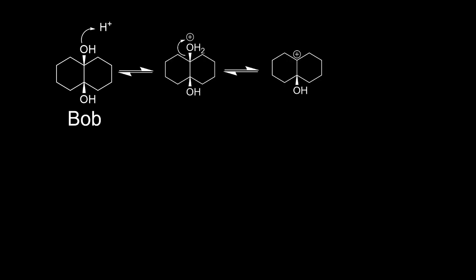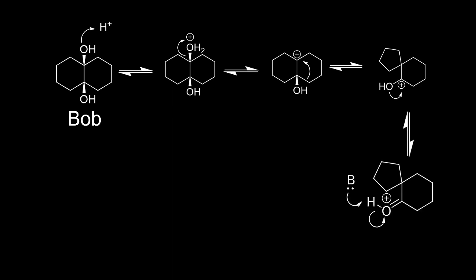In order to stabilize this, one of the bonds of the carbon holding the second alcohol shifts to the carbocation, rearranging the compound into a spirobicyclic. Bob's alcohol's lone pair can kick down to form a double bond, and a subsequent deprotonation from the conjugate base leaves Bob a changed molecule.